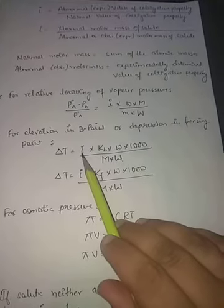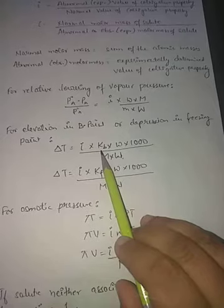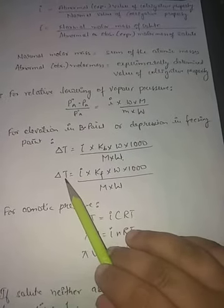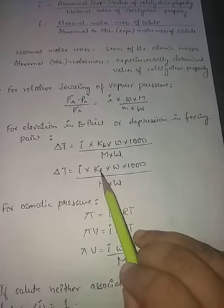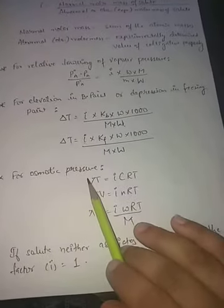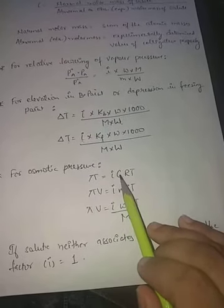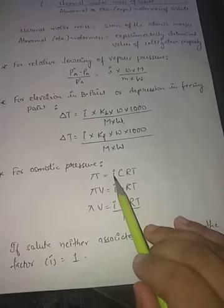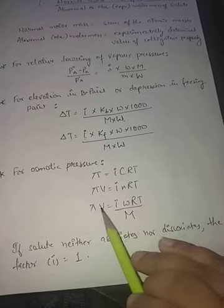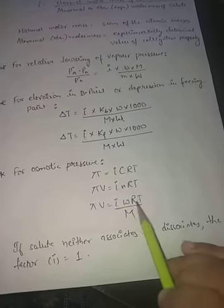For elevation in boiling point and depression in freezing point, in the same formulas we multiply by i: ΔTB = i × KB × molality, and ΔTF = i × KF × molality. For osmotic pressure: π = iCRT, or πV = iNRT, or πV = i(W/M)RT. If the solute neither associates nor dissociates, the factor i equals 1.